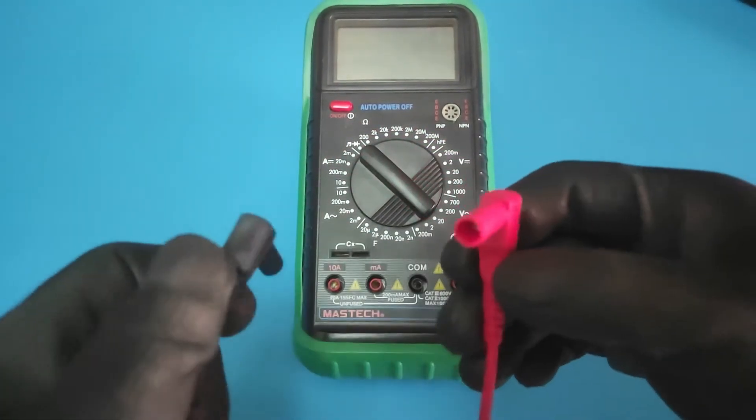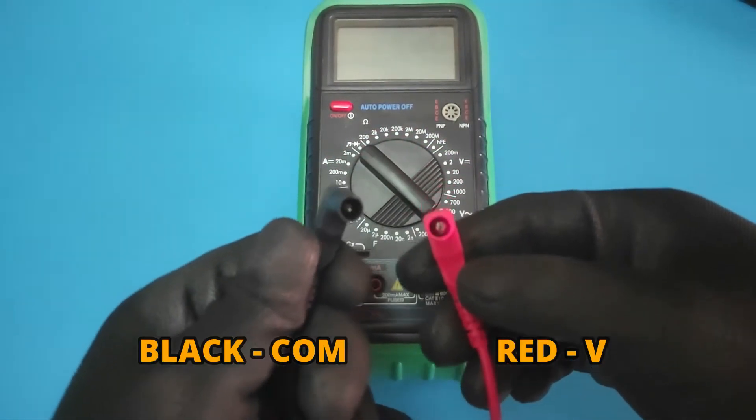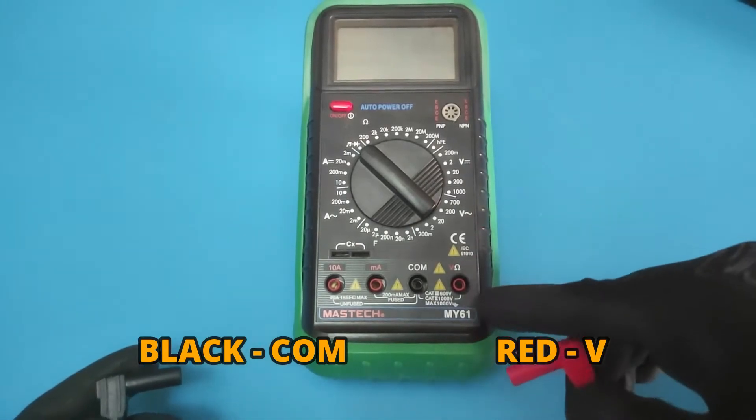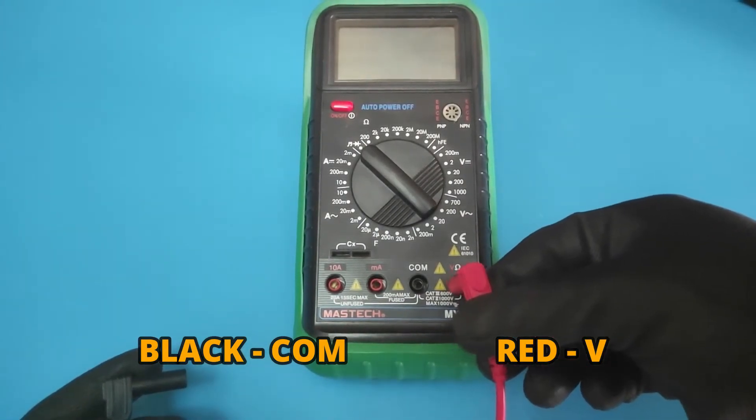The next step: plug the black negative multimeter probe into the port marked COM, and the red positive probe into the port marked V+.